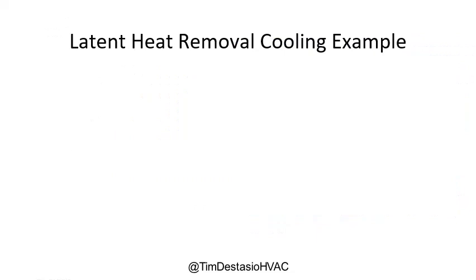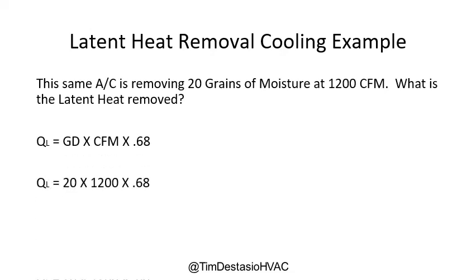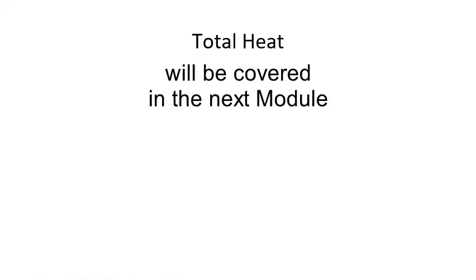Now let's plug these values into the latent heat formula. The air conditioning system is removing 20 grains of moisture at 1,200 CFM. Plugging into the formula — 20 grains difference times 1,200 CFM times 0.68 — we arrive at 16,320 BTUs per hour, or 1.36 tons of latent heat removed. So far we've discussed sensible heat and latent heat, and now we can put those two together to arrive at total heat.